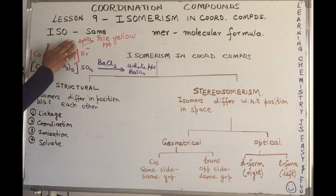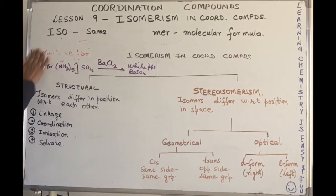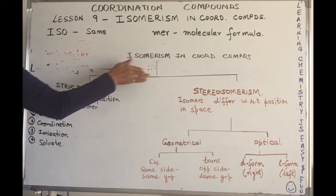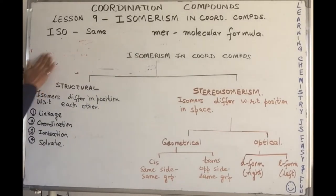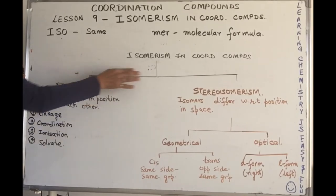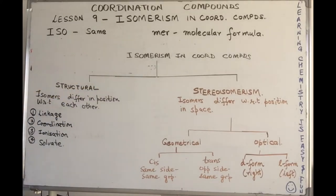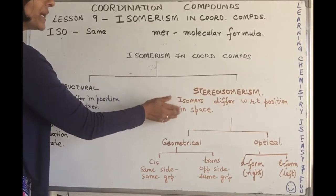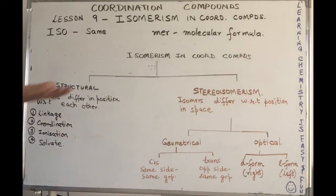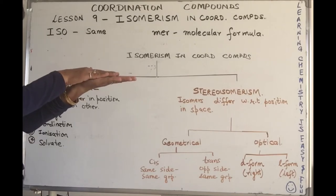Isomerism in coordination compounds is of different types. In order to make the understanding simpler, I have divided into the form of a chart: isomers to structural and stereo. Structural means where the isomers differ only in position with respect to each other, like the example we saw here. Stereo on the other hand is where they differ with respect to position in space.